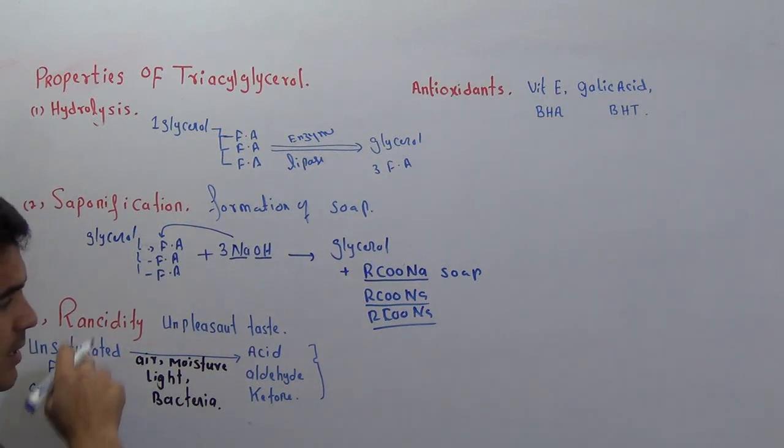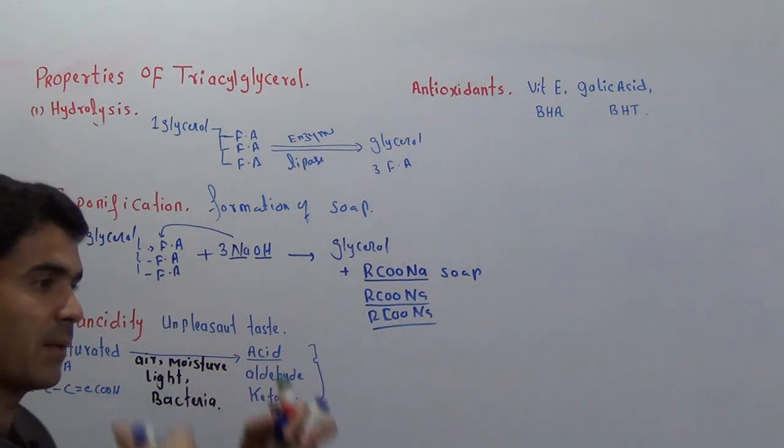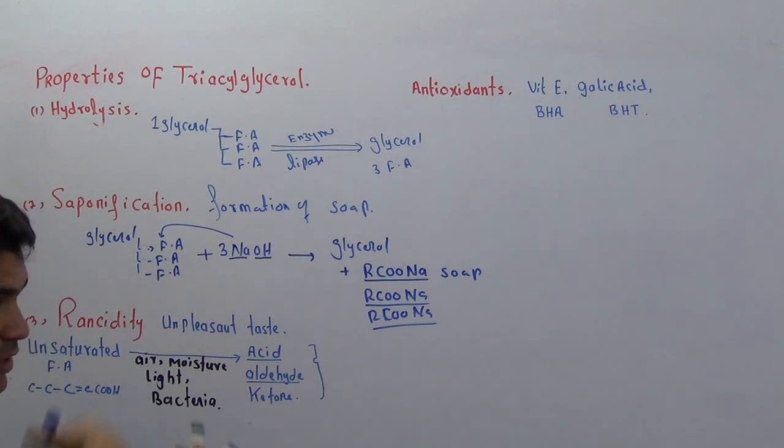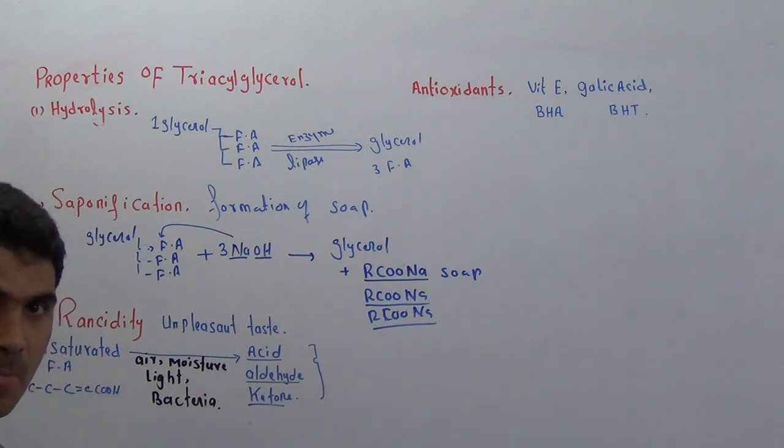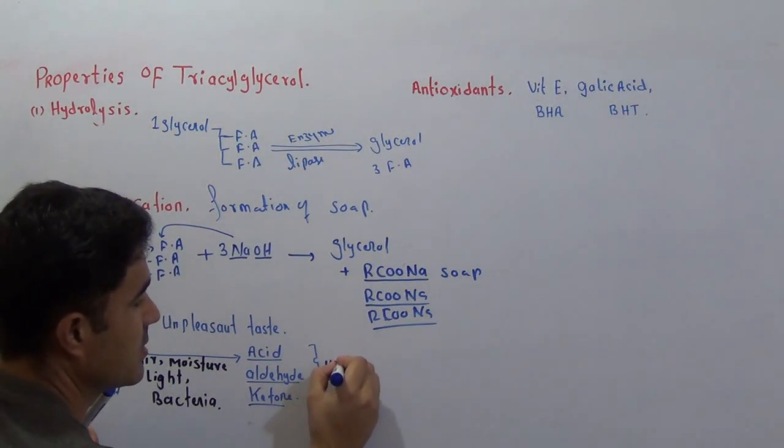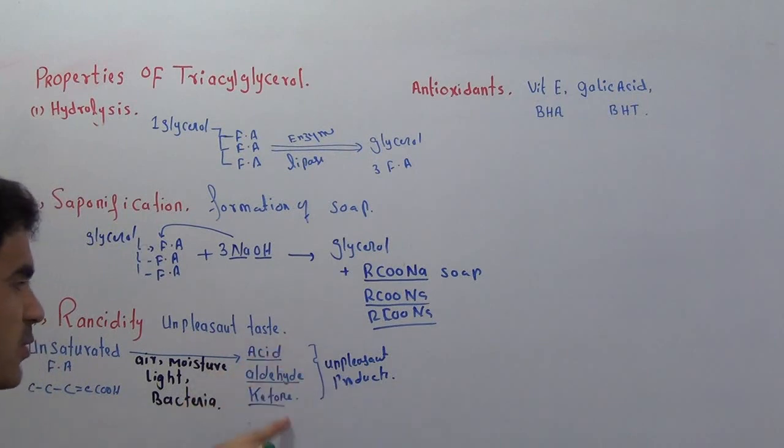The fatty acid will convert into either an acid which develops bad smell, or it will become an aldehyde which also has a bad smell, or sometimes it becomes a ketone. These three products come from the fatty acid and these three products are unpleasant products responsible for the bad smell.